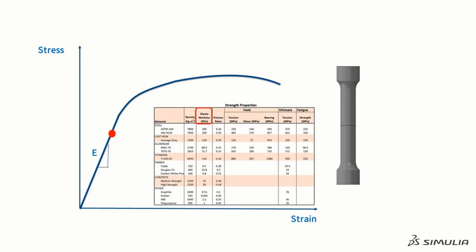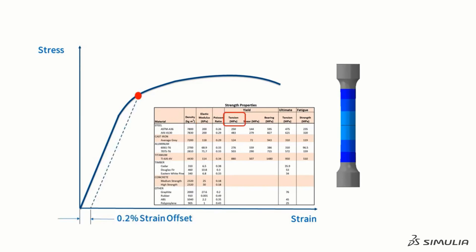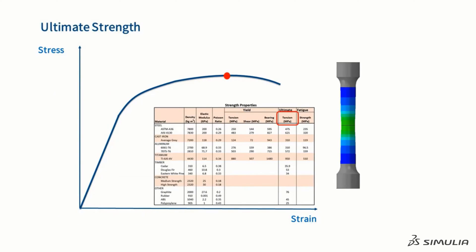The elastic modulus is the slope of this line. For most metals, the yield strength is defined to be the stress level at 0.2 percent strain offset. The ultimate strength is defined as the stress level where the specimen starts necking down.